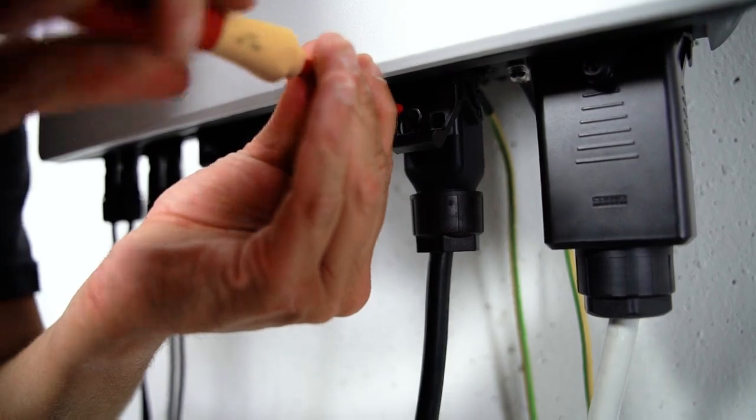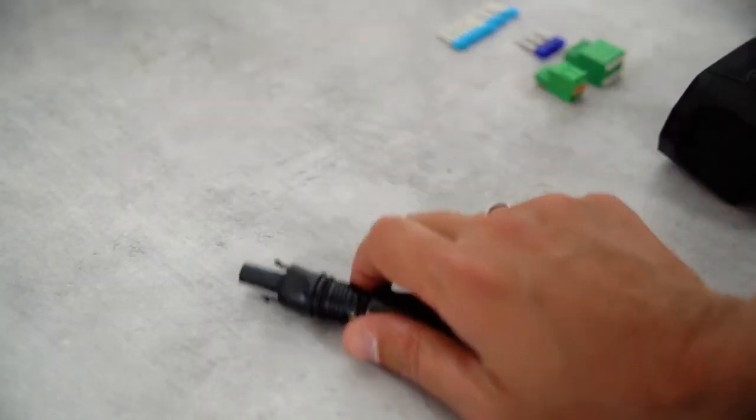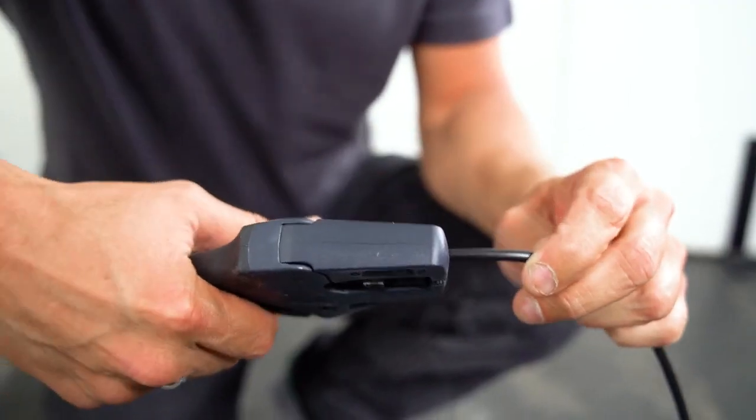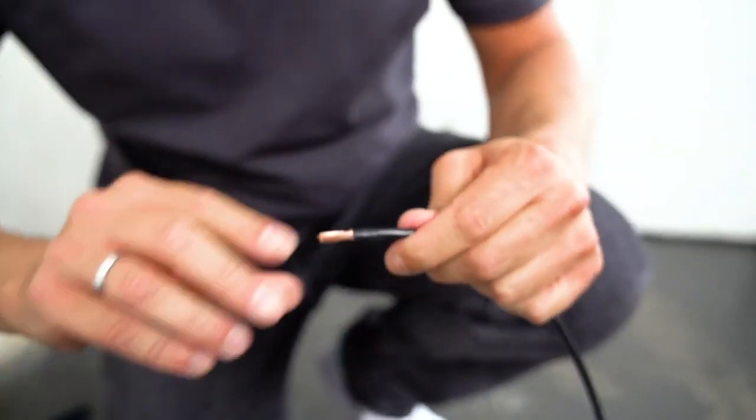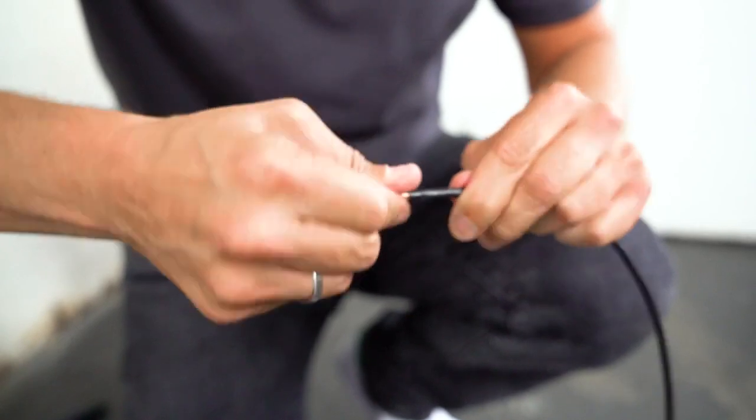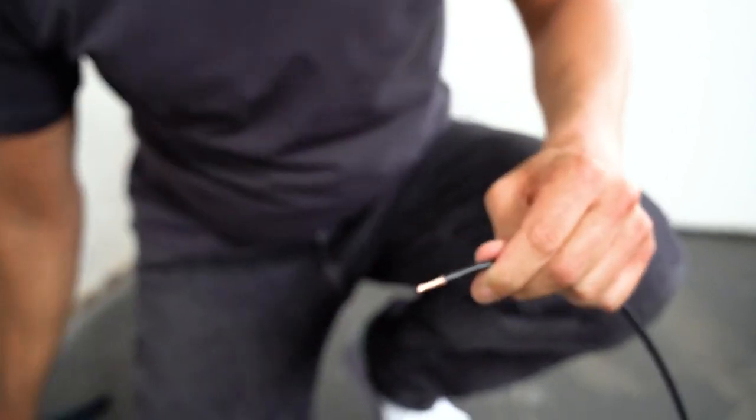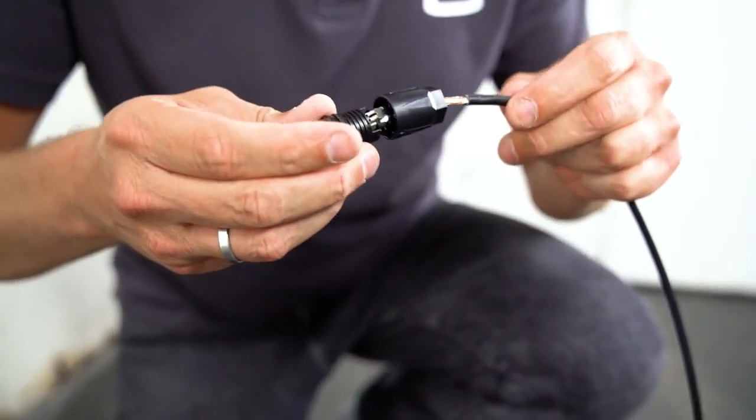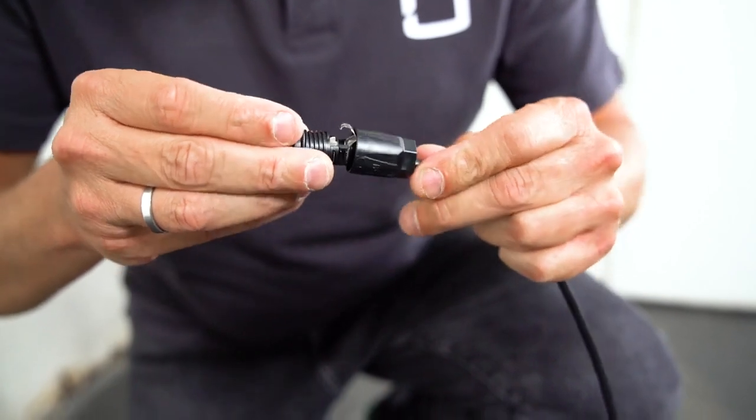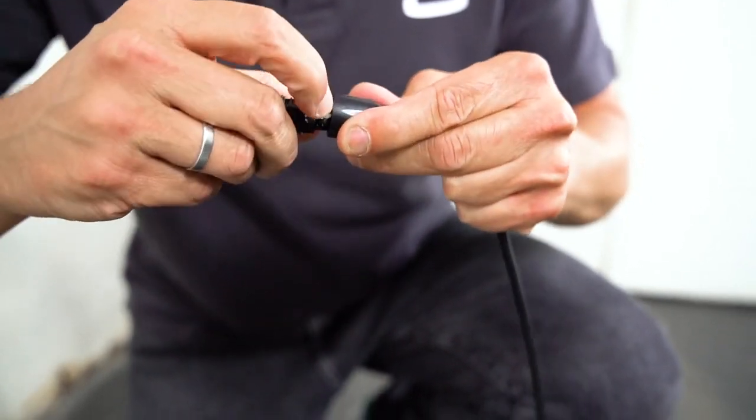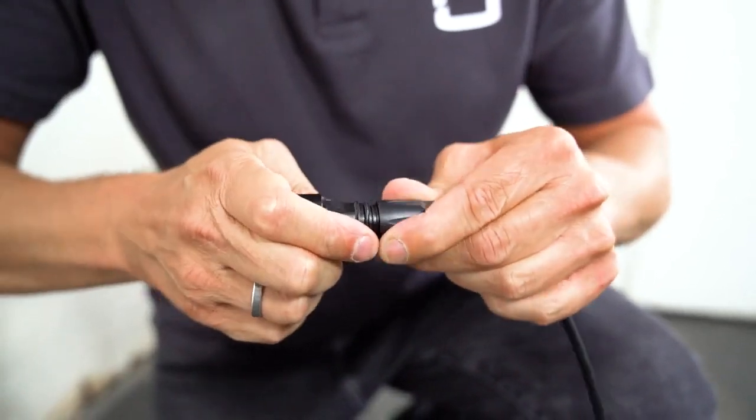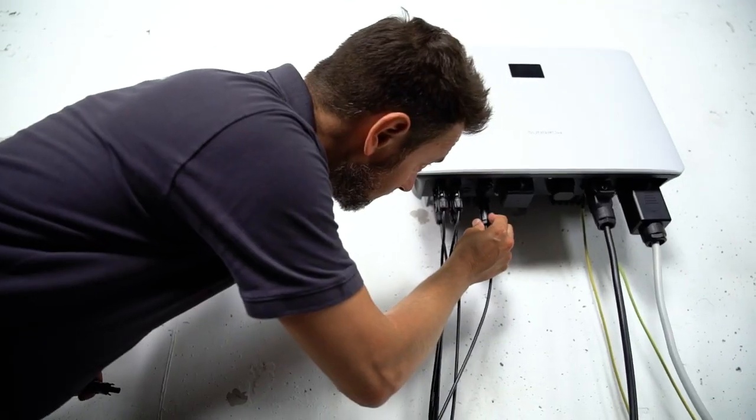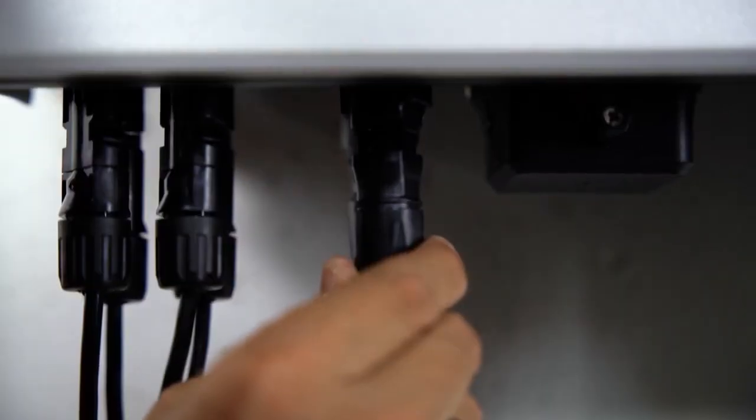To connect the single-phase hybrid to the SunGrow battery, you have to use SunClix connectors. Pay attention to the correct polarity, it is marked on the inverter. First, insert the cable until resistance is felt. Now the cable is fixed to the connector by pushing down the spring. A clear click can be heard when it clicks into place. Tighten the plug.